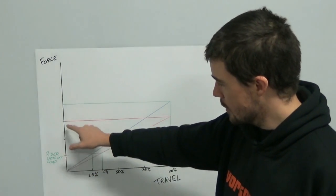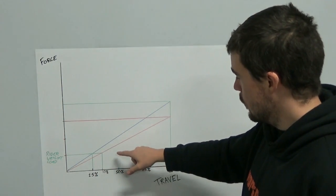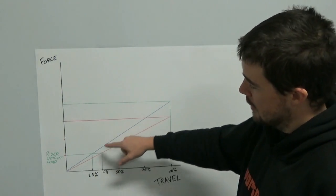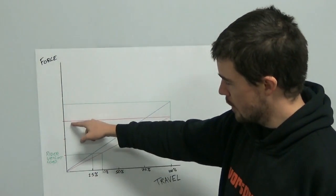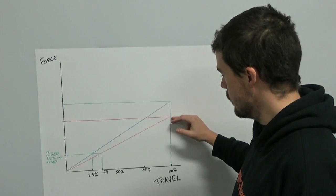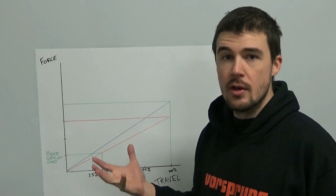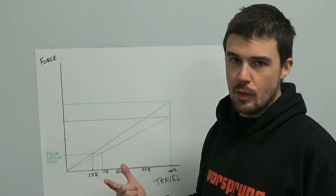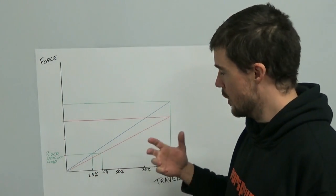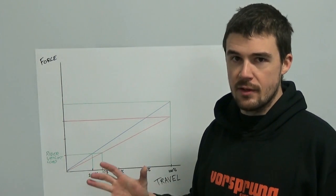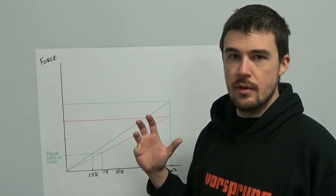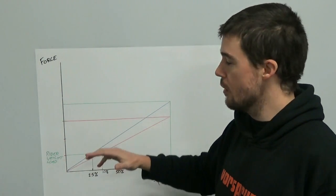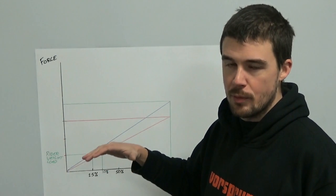With the red line, at the same rider weight load, we're getting 33% sag. What we can see from this is that with 33% sag, it takes three times the rider's weight to fully bottom out the spring. This is obviously assuming a linear spring and a linear leverage rate on the rear of the bike. There are confounding factors not accounted for here, but it gives a basic understanding of why this is transferable from one person to another.